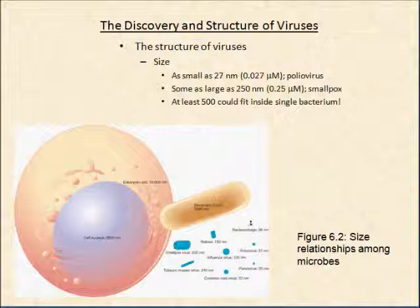One of the reasons that we couldn't see viruses was that they are so small. They can be as small as 27 nanometers — that's the size of the polio virus. They can actually be as large as 250 nanometers, which is in the range of some of our smallest bacteria, and that is in the smallpox virus. In fact, as many as 500 or more viruses can fit within a single bacterium.